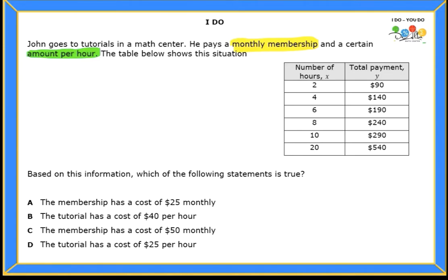So what does it mean by monthly membership? Well, it means that regardless of the number of hours that he goes for tutorials, he needs to pay so much money a month. And of course, the next one is how much money will he pay per hour? We don't know it yet. Let's analyze the table. So in the table, it says that when he goes for two hours, the total payment that he does is $90. But when he goes for four hours, the total is $140 and so on and so forth.